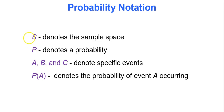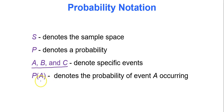For probability notation, we will often use capital S to denote the sample space — that's all possible outcomes. We use P to denote probability, and capital letters like A, B, and C to denote specific events. For instance, let event A be that the coin lands on heads. The probability of event A, or P(A), is 1 out of 2, or 0.5. So P(A) means: what is the probability of event A occurring?